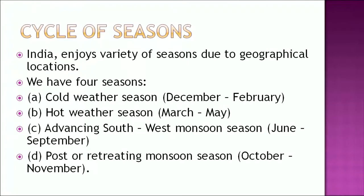Now let's understand the cycle of seasons. India enjoys a variety of seasons due to its geographical location. We have four seasons: cold weather season from December to February, hot weather season from March to May, advancing southwest monsoon season from June to September, and post or retreating monsoon season from October to November.